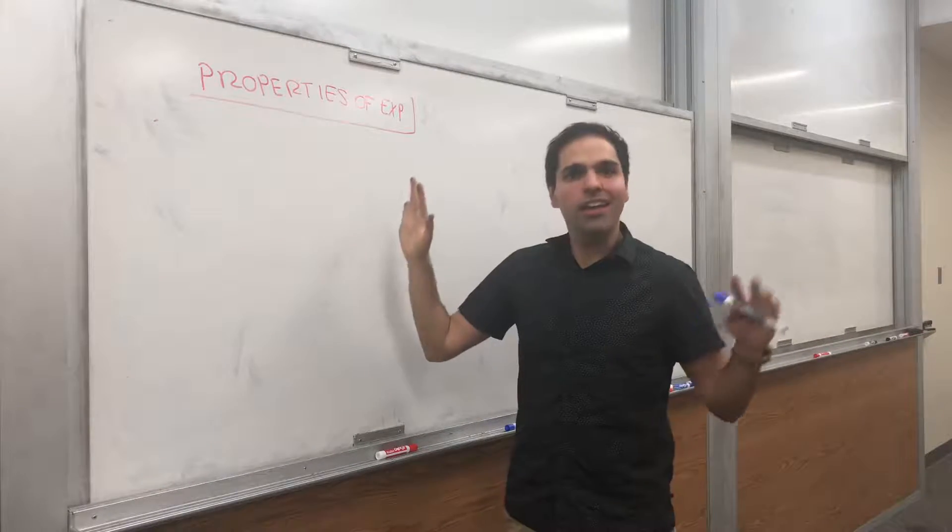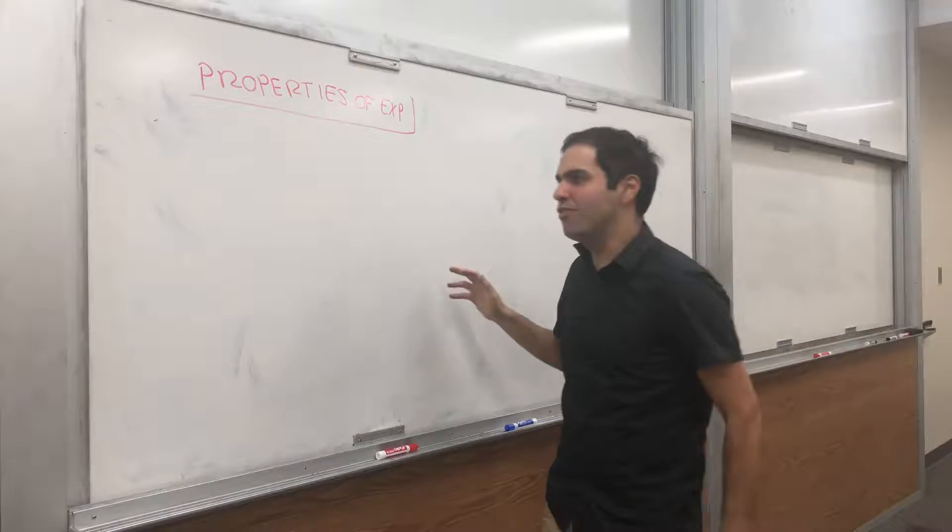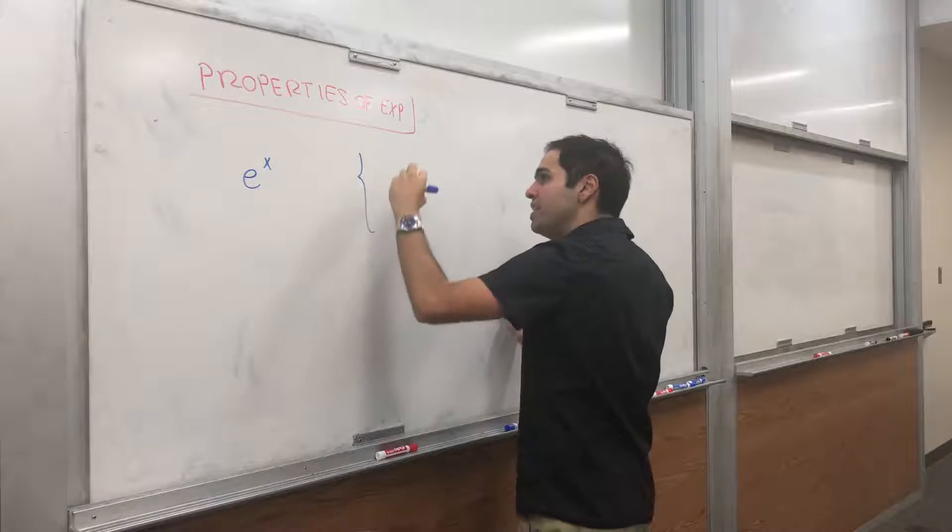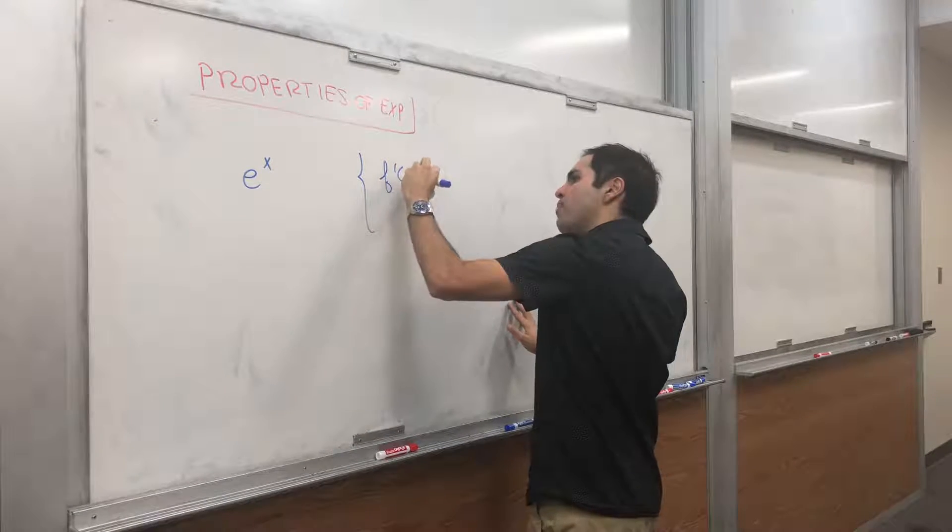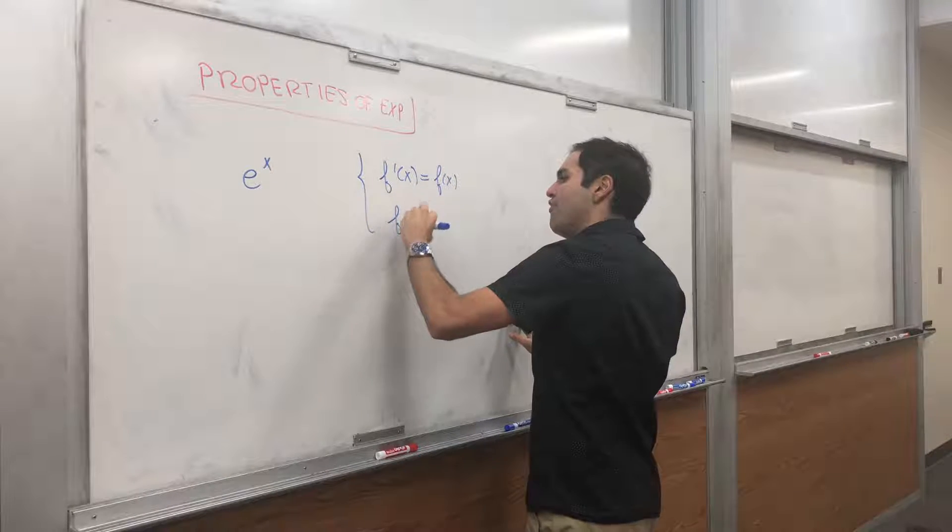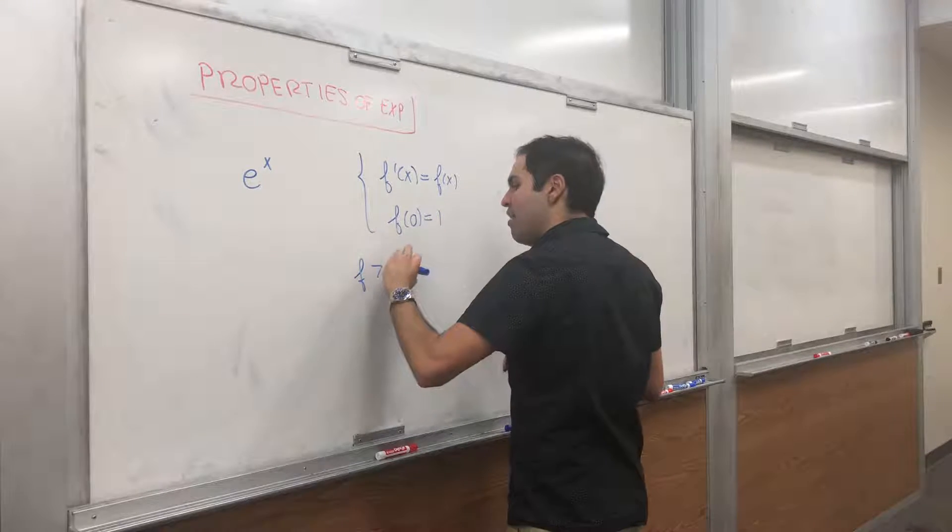And by the way, how do I define the exponential function e to the x? I just define it as the unique solution of f prime of x equals to f of x, with f of 0 equals to 1. And moreover, I assume f is positive.